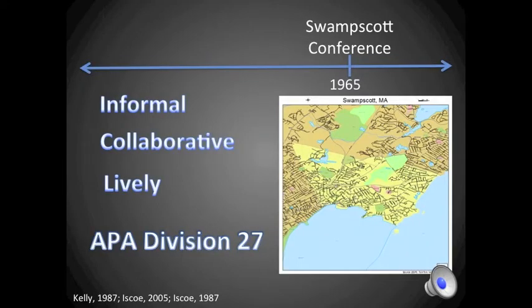Psychologists had started to identify a need for community-based mental health interventions. The organizers of the Swampscott Conference brought together 35 participants along with six members of the conference planning committee. Five of the attendees were from the National Institute of Mental Health Training Division; the rest were clinical psychologists. There was one woman and no ethnic minorities in attendance. Massachusetts was at the forefront of the movement towards community-based healthcare, so Swampscott, Massachusetts was a natural place for the conference to occur. Attendees described it as informal, collaborative, and lively. Participants engaged in small group discussions with the goal of developing a new formal agenda for the prospective field of community psychology.